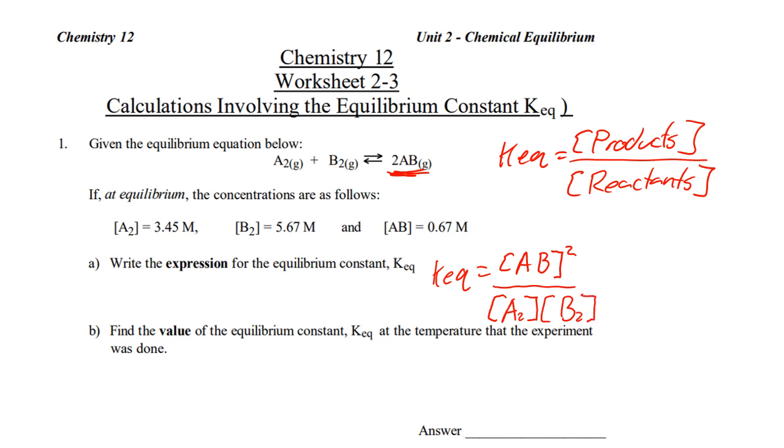Now, to calculate the Keq, the actual value of it, we're going to plug in these numbers. So, Keq, now AB is 0.67.